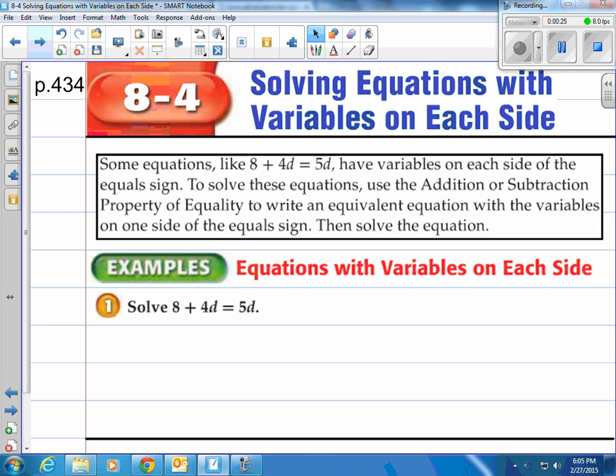Some equations like 8 plus 4d equals 5d have variables on each side of the equal sign. Notice we have 4d on the left and we have 5d on the right of the equal sign. To solve these equations we use the addition or subtraction property of equality to write an equivalent equation with the variables on one side of the equal sign. Then we solve the equation.